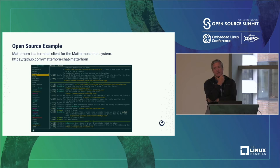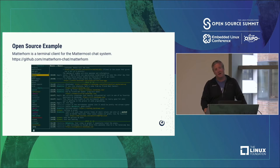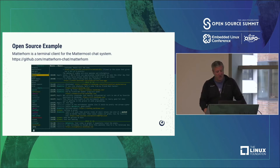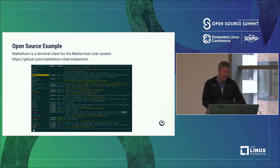Matterhorn is a community project — it's a terminal client written for Mattermost in Haskell. There's a team of people out there who maintain this project. If you want a terminal version of Mattermost, you can go install it and connect straight to Mattermost from the terminal. This is all community-led, all done through our RESTful JSON web service. It's pretty amazing — the power of open source. They basically fully rebuilt the UI in a terminal. It's a lot of work, but that's the power of open source.